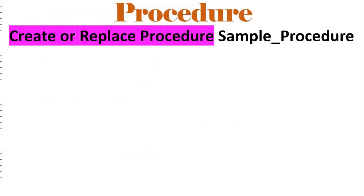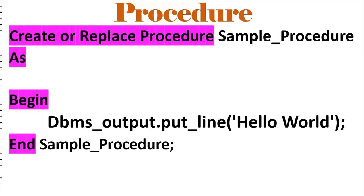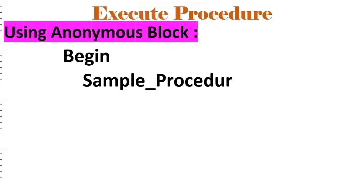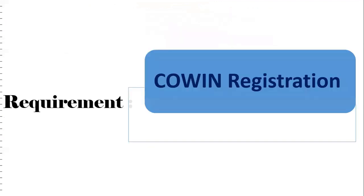Let's look at the procedure syntax. The sample syntax is: CREATE OR REPLACE PROCEDURE procedure_name. For example, 'sample_procedure' is the procedure name. Inside, we write BEGIN, DBMS_OUTPUT.PUT_LINE('Hello World'), and END. To execute it, we use an anonymous block: BEGIN sample_procedure; END. We will get the output 'Hello World'. This is the sample procedure. Now let's move to the first requirement — Co-Win registration.